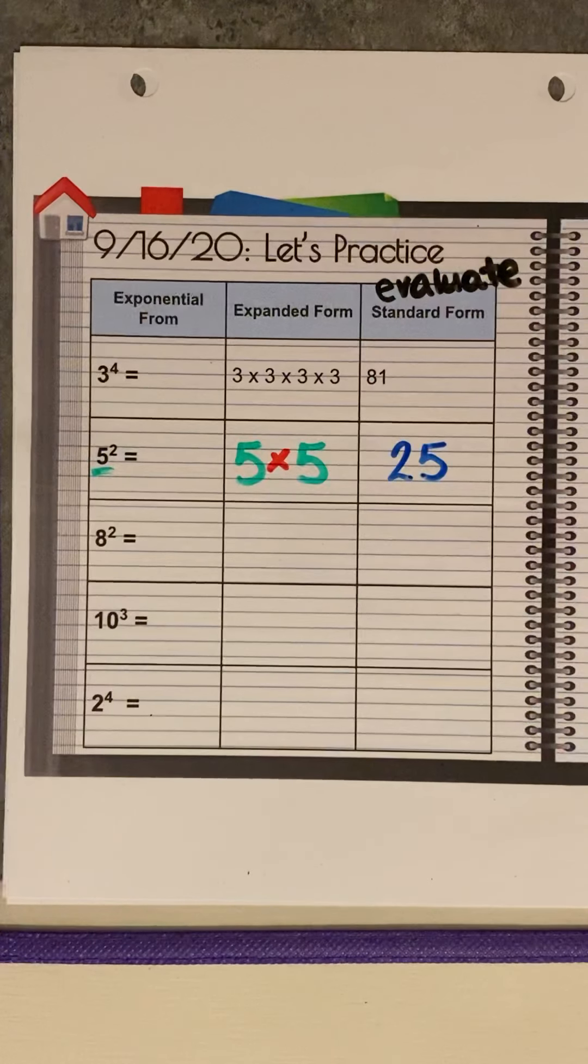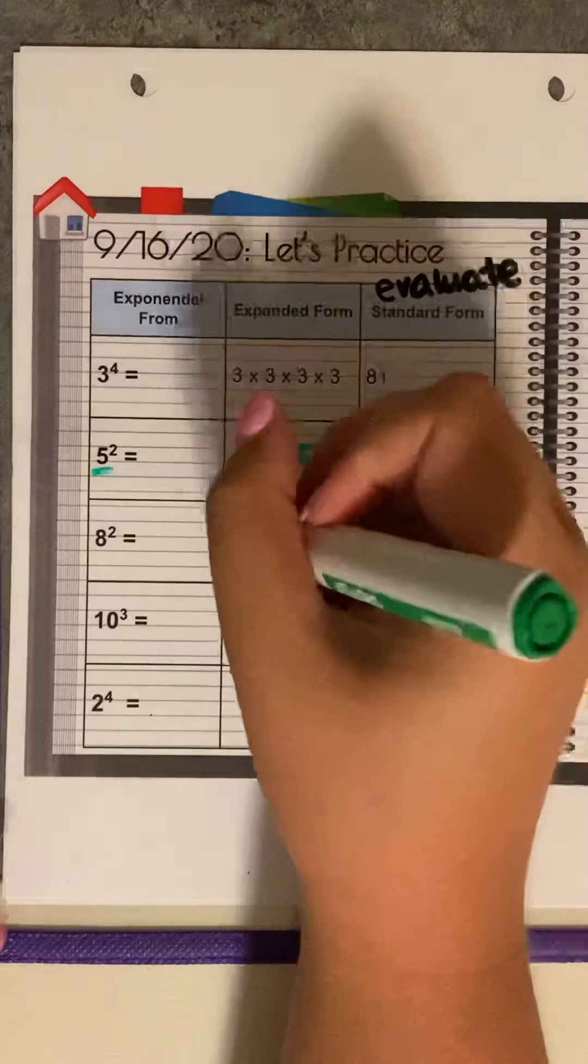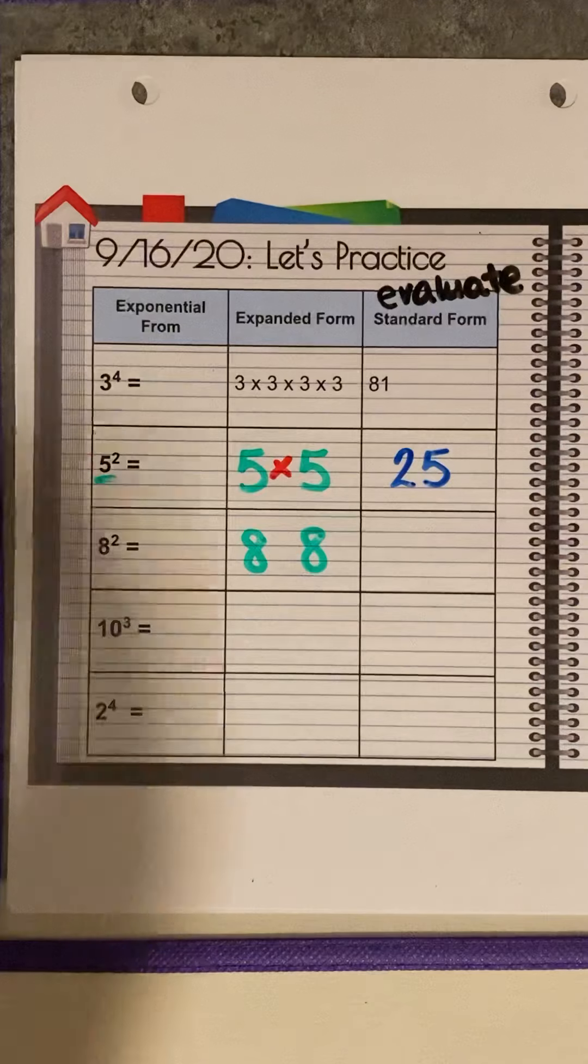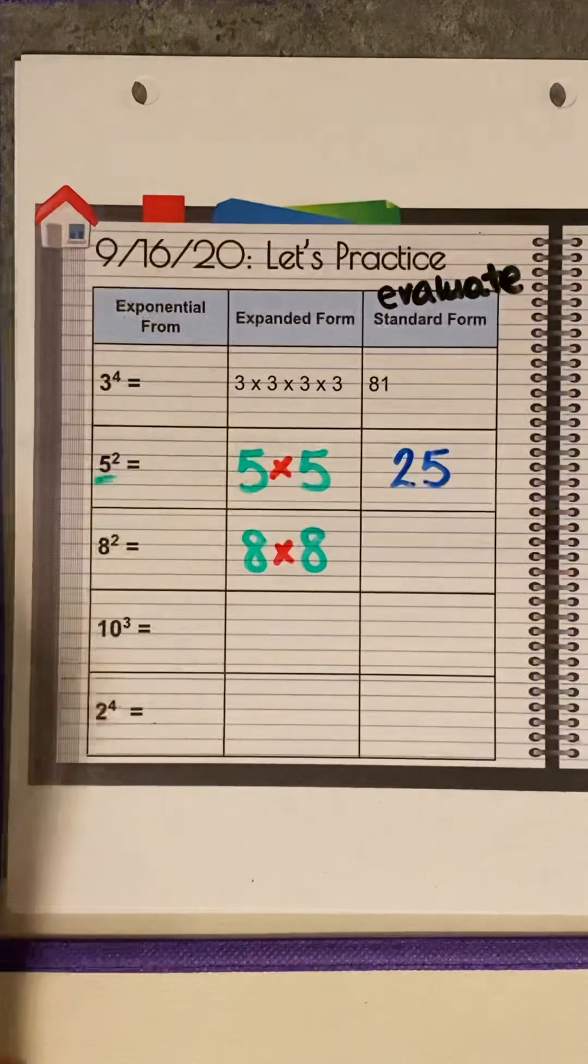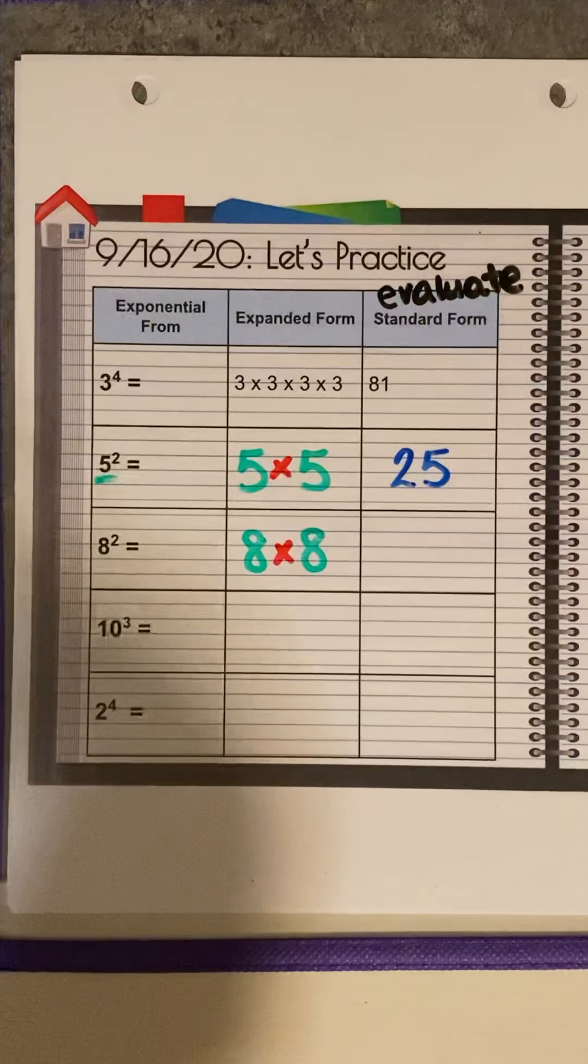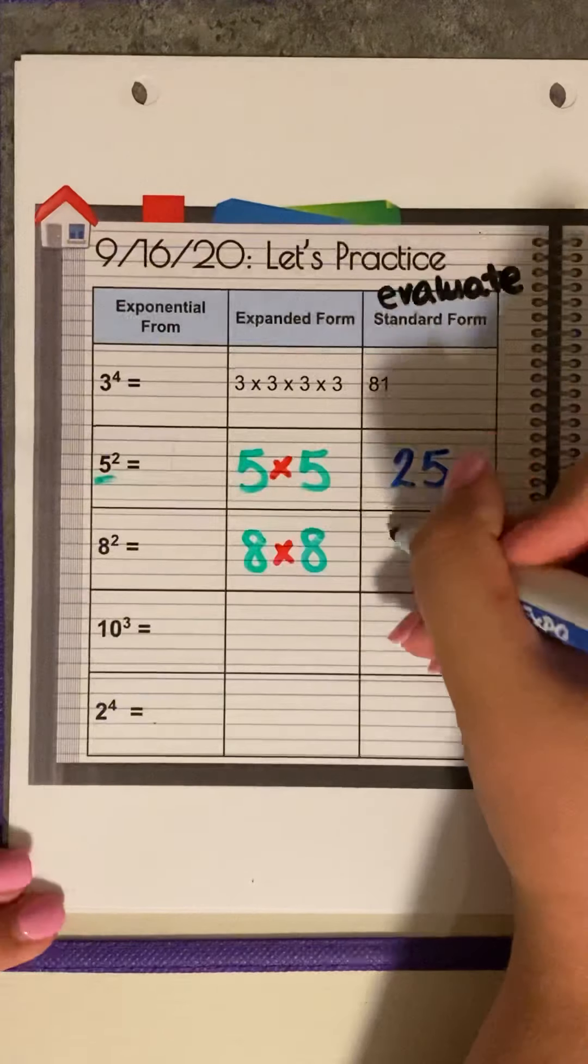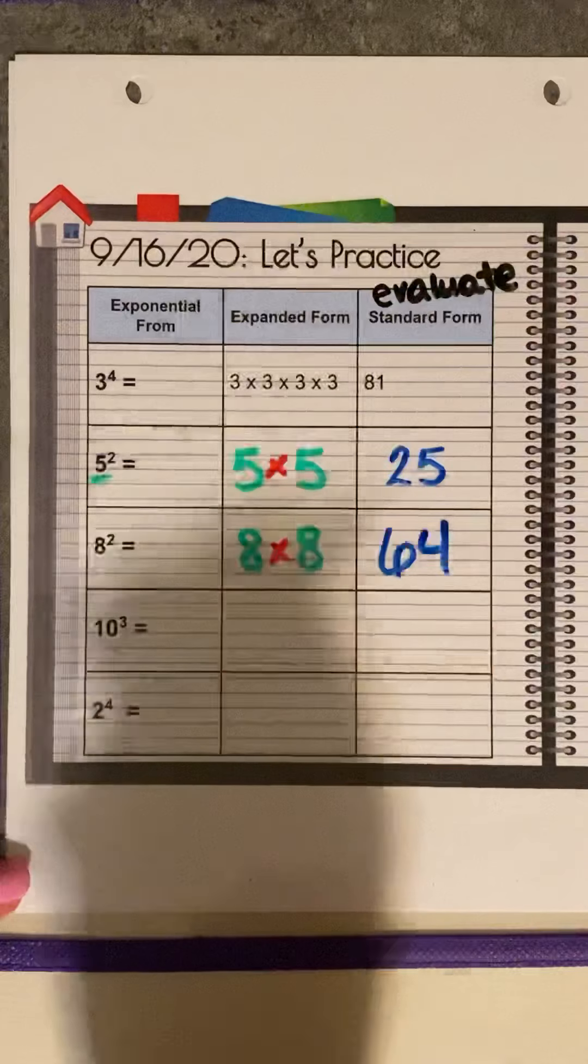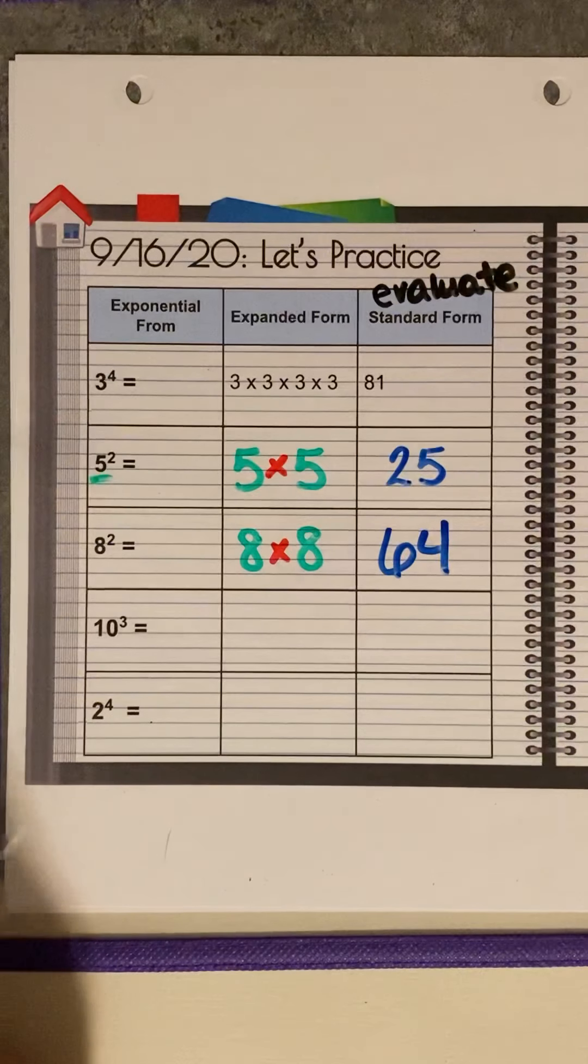All right. Next one. Eight squared or eight to the second power. What does that mean? What's our base? Our base is eight. Our exponent is two. So that means we are going to write down the number eight two times. And what are we doing with those? Multiplying. So what is eight times eight? If you haven't heard of this riddle yet, I'm telling it to you now. I ate and I ate till I got sick on the floor. Eight times eight is 64. Do you see how that kind of rhymes there? Sounds weird, but it works.